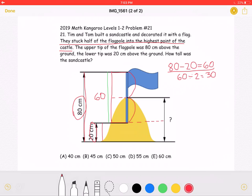60 cm divided by 2 will give us 30, which means that each half of the flagpole has a height of 30 cm. The question asks for how tall is the sandcastle, which is this measurement right here.